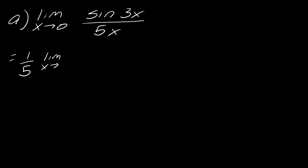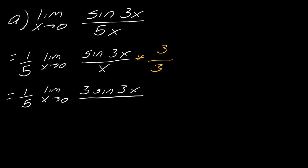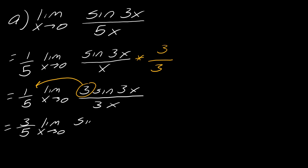We're going to focus on sine of 3x over x. I really need a 3 down here, so I'm going to multiply the bottom by 3 — and because it's a fraction, whatever we do to the bottom we also have to do to the top. So we multiply both top and bottom by 3. I get 1/5 out here, and then the limit of 3 times sine of 3x over 3x. The 3 can be moved out in front — you don't have to do that, I'm just doing it to make things clearer.